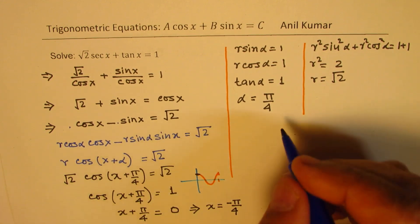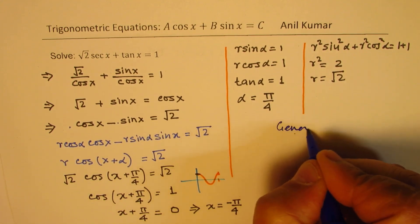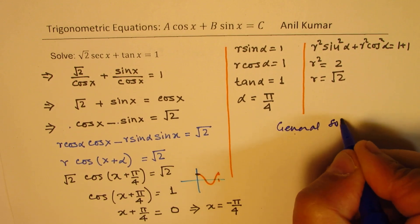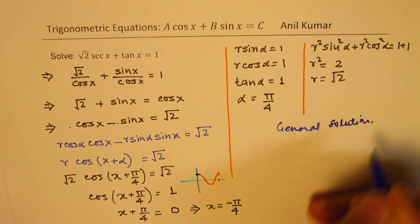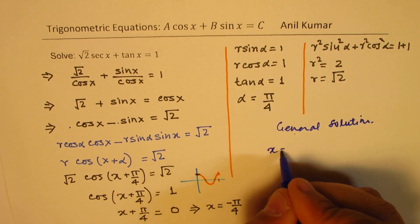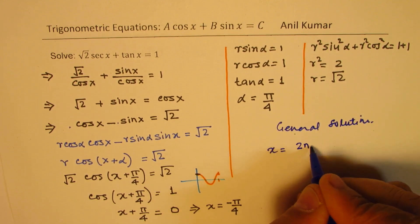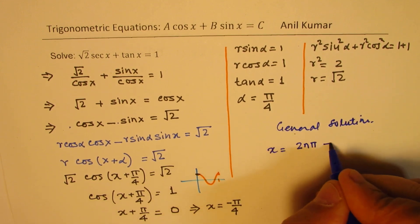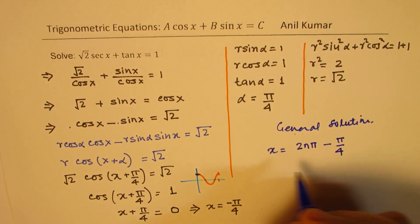We can actually now write a general solution. So general solution will be x equals to 2 n pi minus pi by 4, since it is a wave which is periodic. So that becomes our answer.